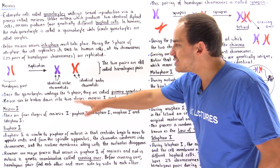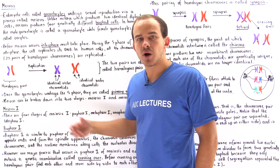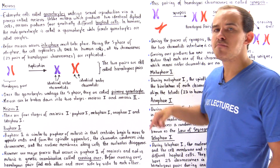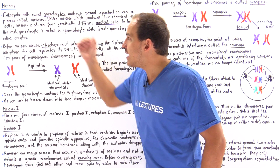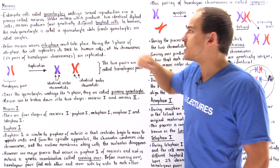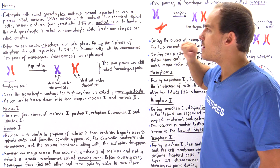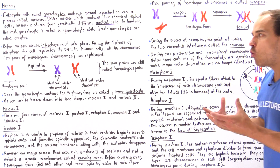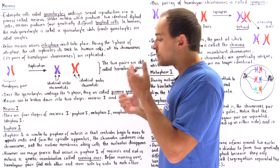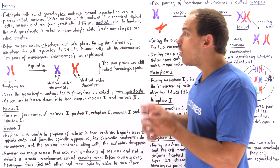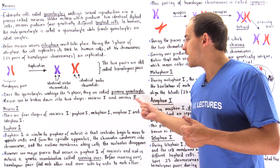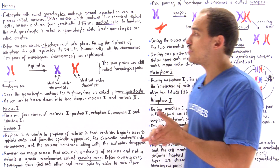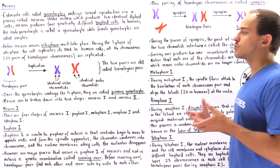Once our gametocytes have undergone S phase, those gametocytes are known as primary gametocytes. So our male gametocytes are known as primary spermatocytes, while our female gametocytes are known as primary oocytes. Before the female human is actually born, all the oocytes basically become primary oocytes. We'll talk more about that when we discuss the process of sexual reproduction.